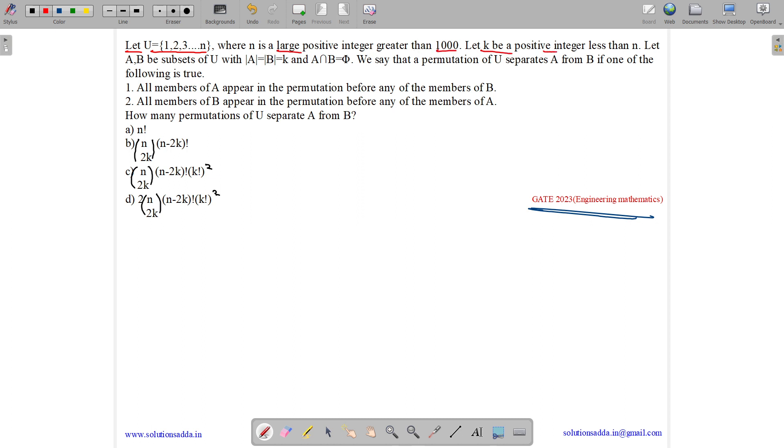Let k be a positive integer less than n. So we have U equals to 1, 2, 3, then we have k somewhere in between, then we have n. So k is less than n.